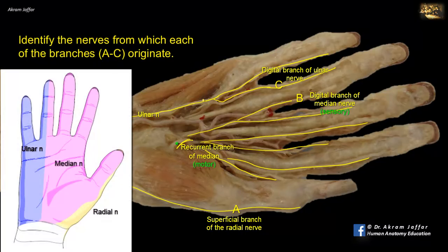Of course, there is another branch not shown in the dissection that supplies the ulnar side of the little finger. It should be mentioned that the exact cutaneous areas on the hand are subject to variation and overlap.